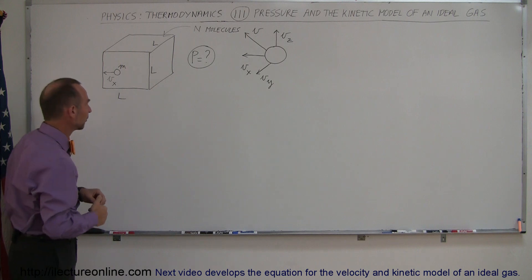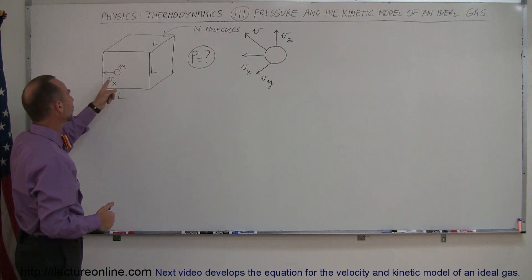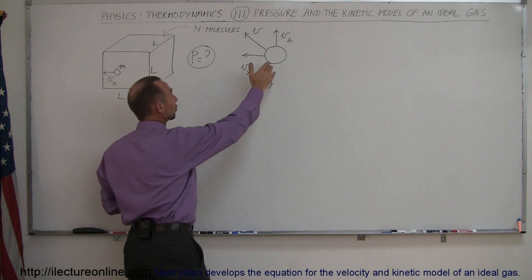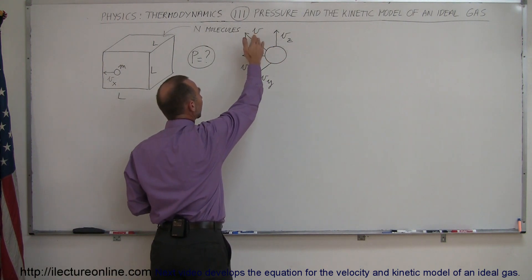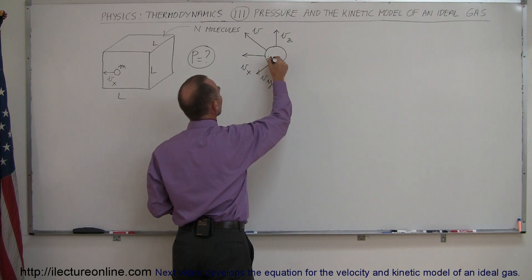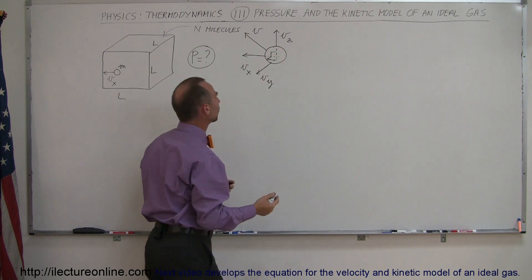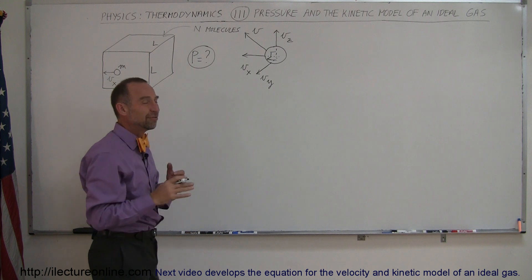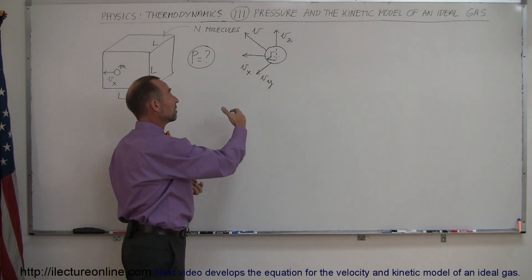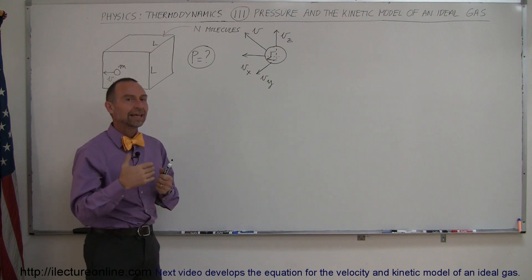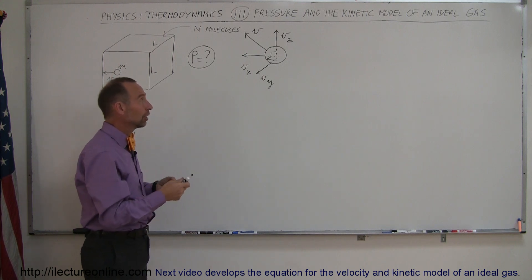I drew a single molecule inside the box — of course there are a great number of them. Assuming that molecule has a velocity component in the x direction, it's moving toward one of the walls. Keep in mind that any molecule will have a velocity in any direction, and that velocity will have an x component, a y component, and a z component. Since we're dealing with a great number of molecules, each having a different v_x, v_y, and v_z, we can assume that on average they all have the same x, y, and z components.